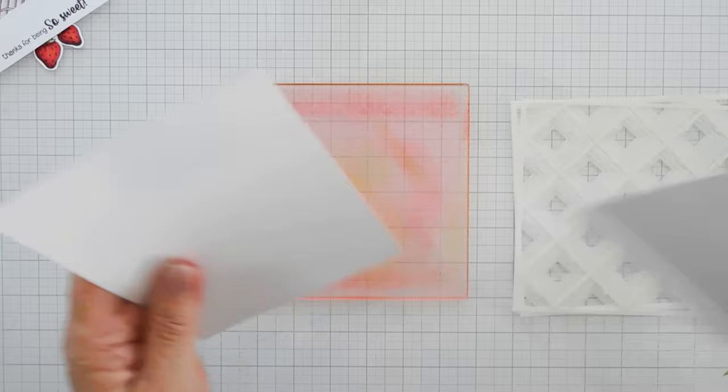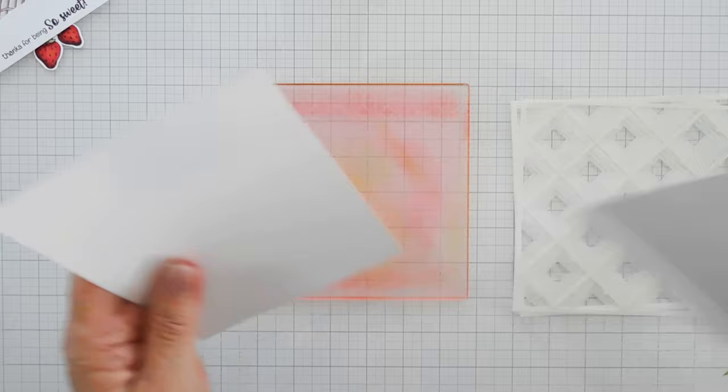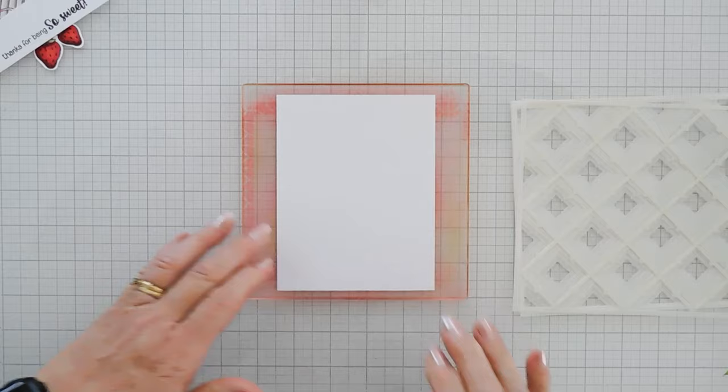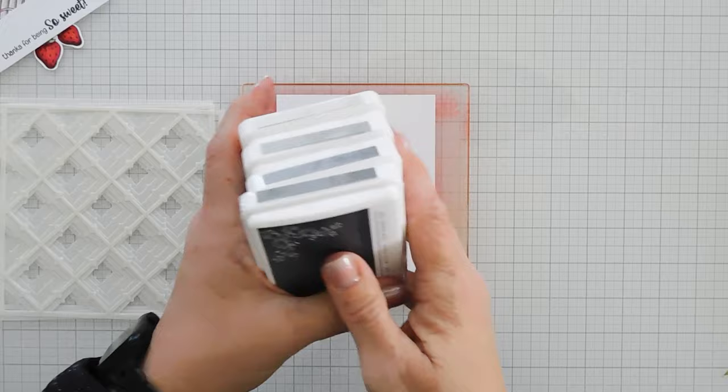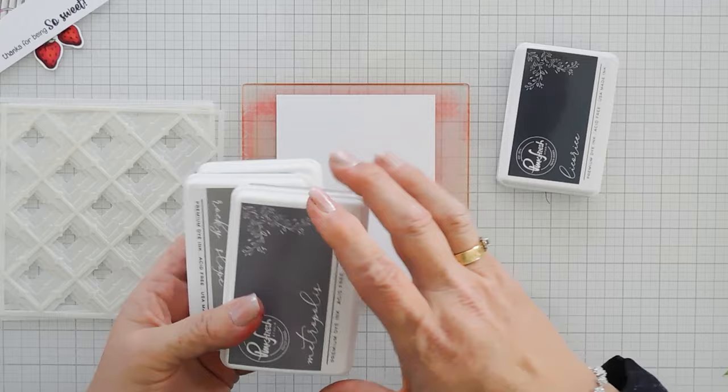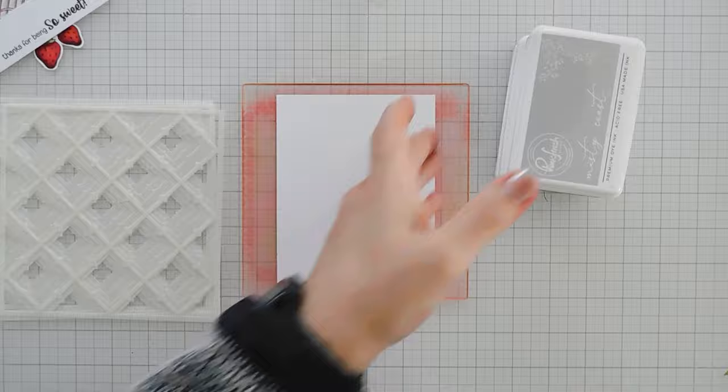I'm going to stencil on a panel that is four and a quarter by five and a half inches, and I'm using my grid mats. Let's scoot these over. I want a neutral background for my card. I want my cupcake to stand out, so I'm bringing in my gray inks. I have four gray inks, and these are all from Pinkfresh Studio. I have Licorice, I have Metropolis, I have Rocky Slope, and I have Misty Coast.